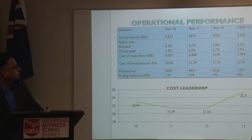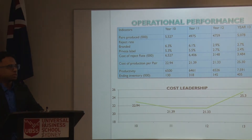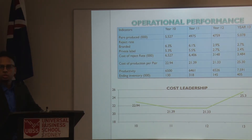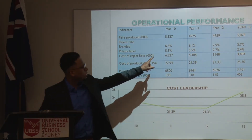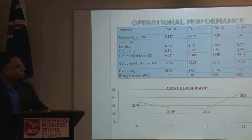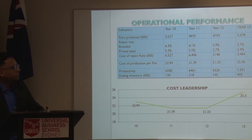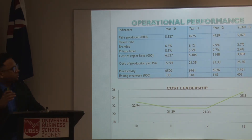Good evening everyone. I am the operational manager of Dunhill Shoes. As my colleague mentioned how we are performing in finance, I will further elaborate the operations of the company. In year 10 we produced over 5,000 pairs, but we gradually decreased production to over 4,900 and then year 12 was 4,700. Looking at the rejection rate, it was quite a significant number at 6.3%. But in year 11 and year 12 we decreased the rejection rate. The reason was we invested in the assembly plant, upgraded the plant, and invested in the workers at $1,800 per worker, which helped decrease the rejection rate.